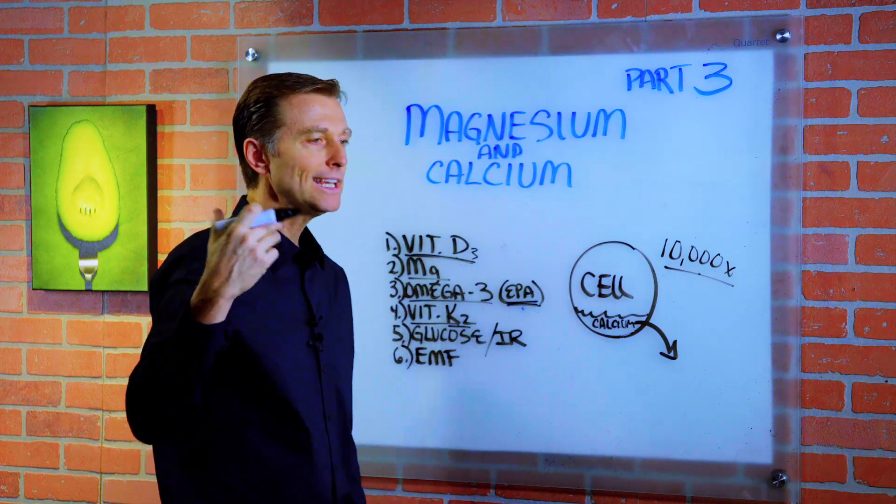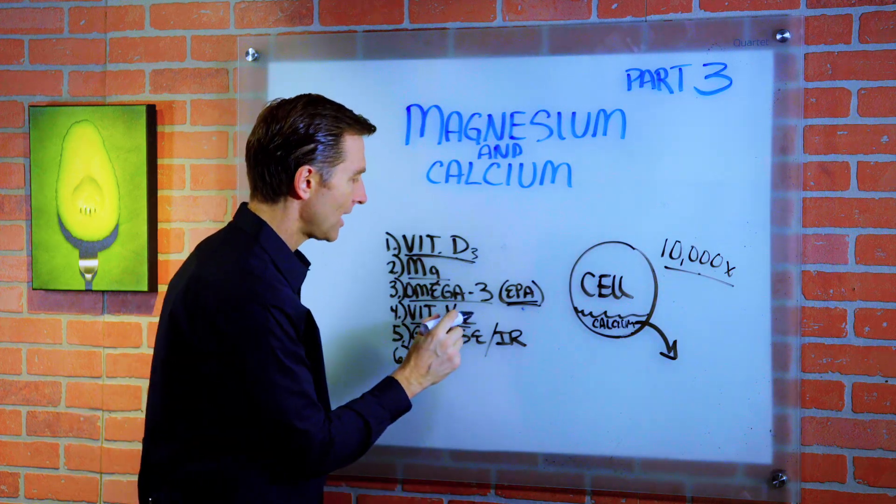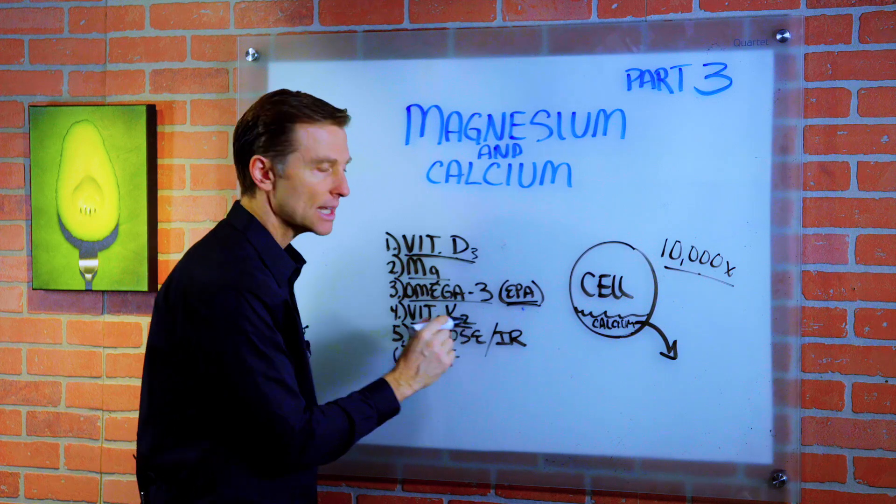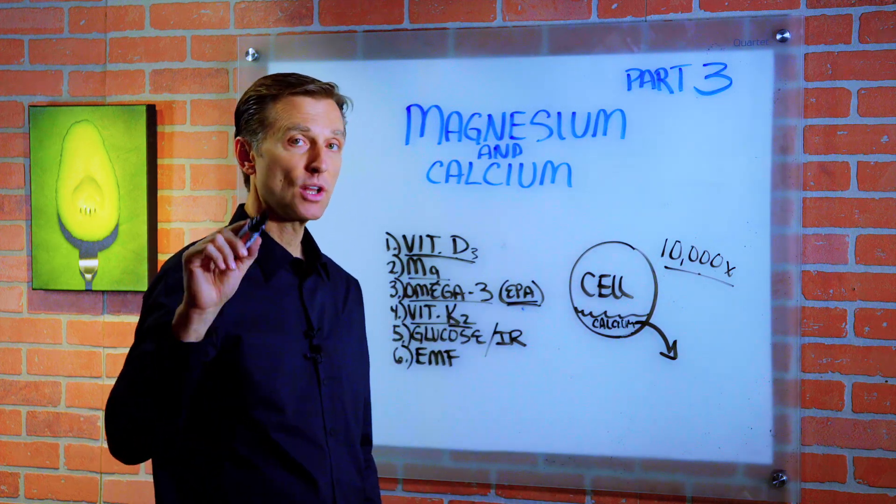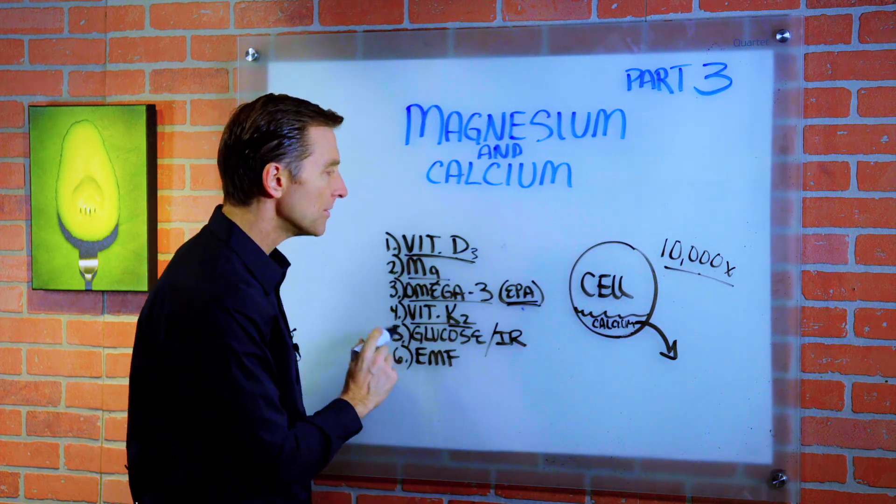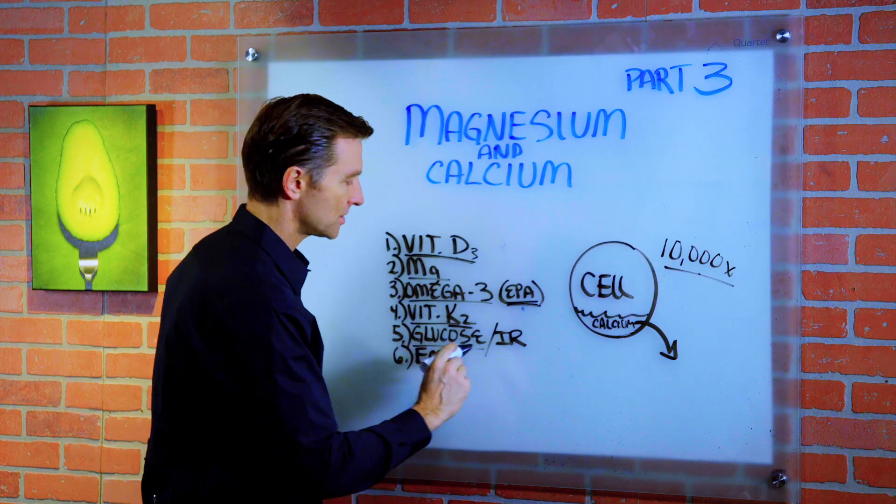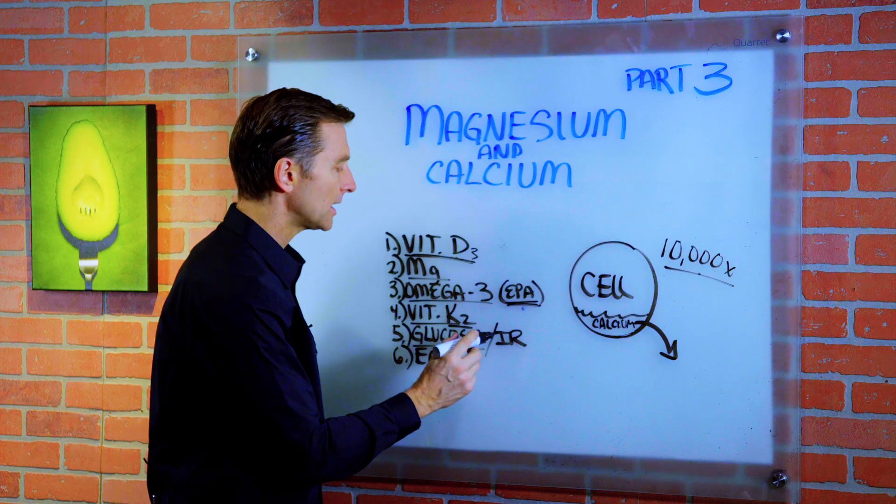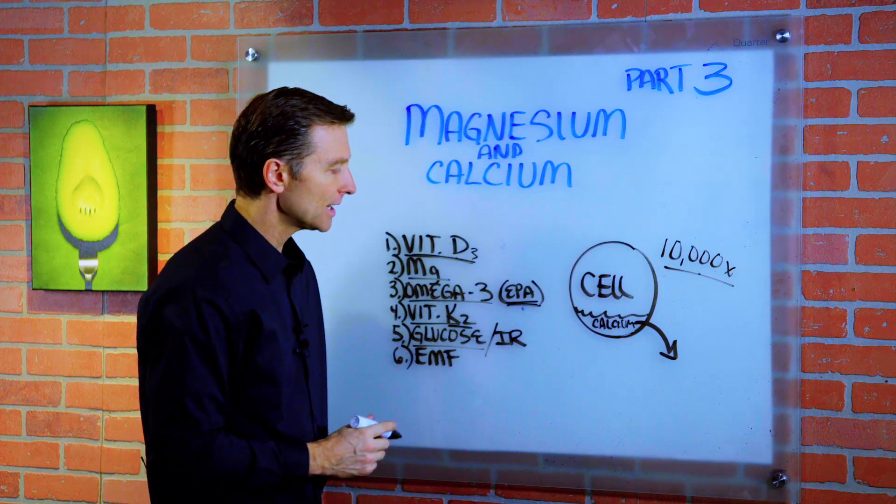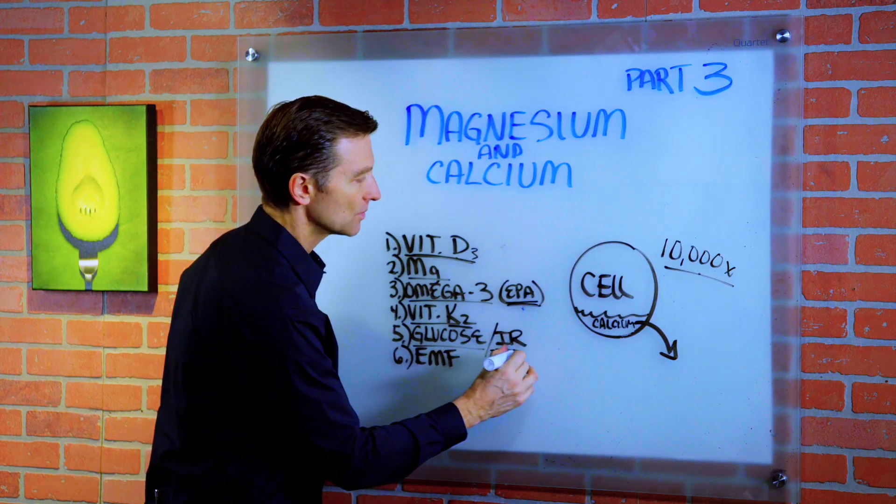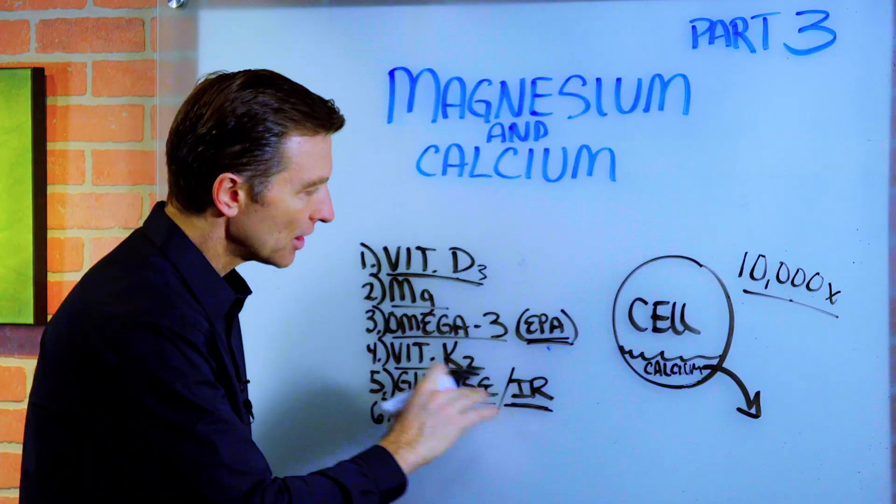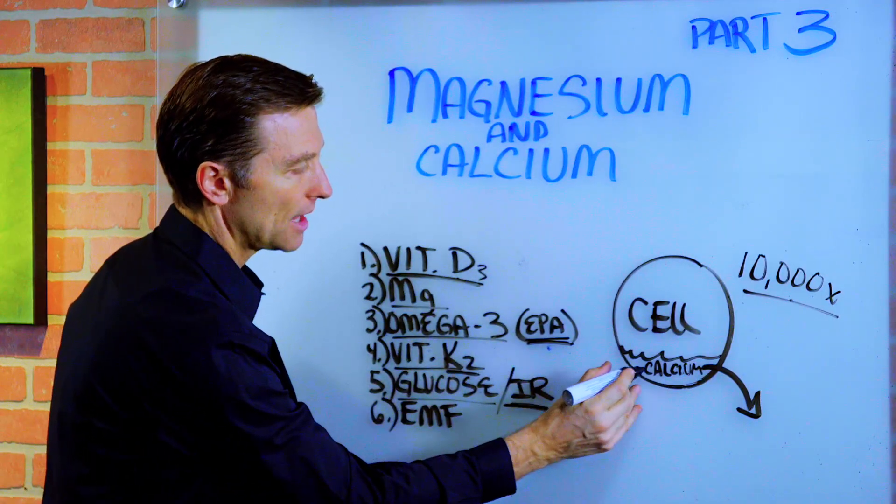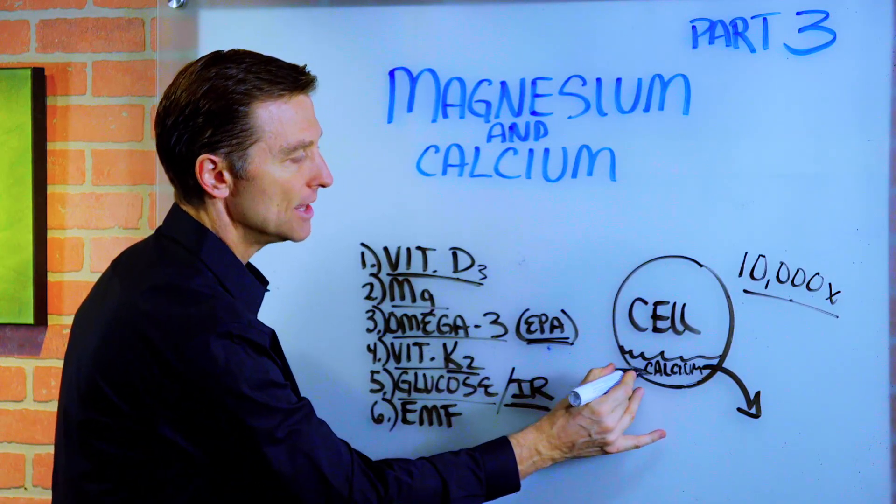But if you're on a keto plan, a healthy keto plan, chances are you'll have enough K2 because it's a higher fat diet, but it's low carb. Number five, too much glucose. If you're a pre-diabetic or you're a diabetic, or you consume too many carbs because you're in a high carbohydrate diet, or you have insulin resistance, which you have high insulin, this scenario right here will definitely keep the calcium locked up inside the cell.